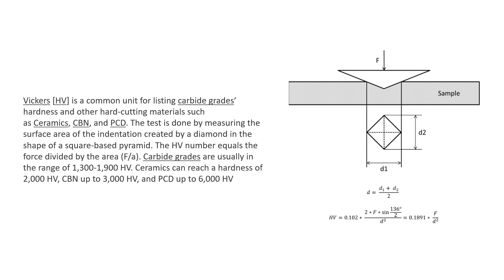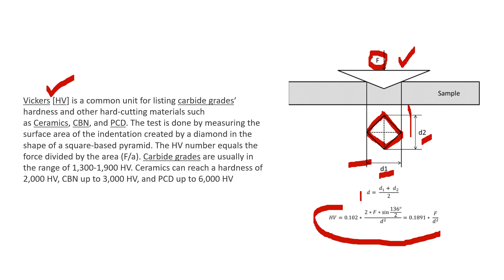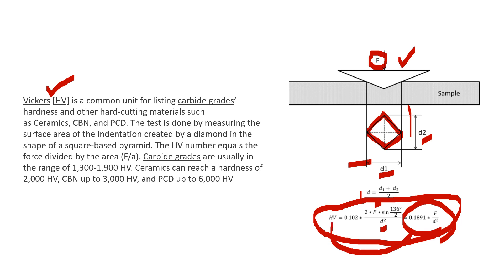The last one for steel is the Vickers Diamond test. The principle is the same but a diamond tip is used. After hammering, a square impression is made. You measure d1 (one diagonal) and d2 (the other diagonal), then calculate d = (d1 + d2) / 2. The Vickers hardness formula is: HV = 0.1891 × F / d². Substituting the known force and calculated d gives you the Vickers hardness value.